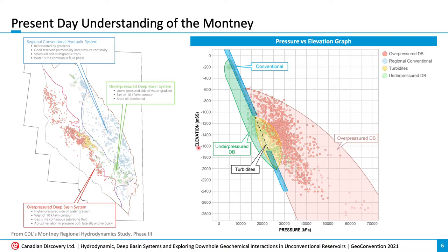When we plot all of this data up on a pressure-elevation graph, we can see how these systems differ. The blue line here is the regional water gradient, and as expected, the conventional system sits along that gradient. The turbidites are also more or less normally pressured, with the over-pressure Deep Basin sitting above the regional hydraulic gradient with pressures much higher than 10 kPa per meter, oftentimes around or above 15 kPa per meter, and the under-pressure Deep Basin system sits slightly below the regional water gradient.